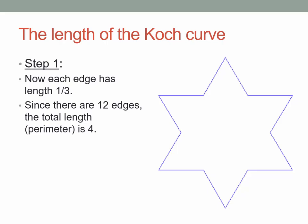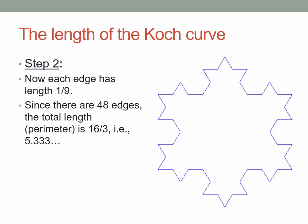At step one, the edges are shorter — as we've already noted, these shorter edges have length one-third. But there are 12 of them, so multiplying 12 edges by length one-third, the perimeter is now four rather than three. At step two, the edges are even shorter: one-third of one-third, which is one-ninth. Each edge has length one-ninth, and there are 48 of those edges. So the total length is 48 times one-ninth, which is the fraction 16/3, or 5.333 repeating.